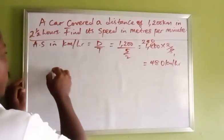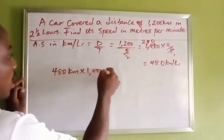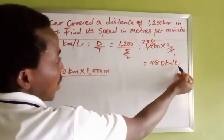So we say 480 kilometers times 1,000 meters divided by 60, because we have 60 minutes in an hour.